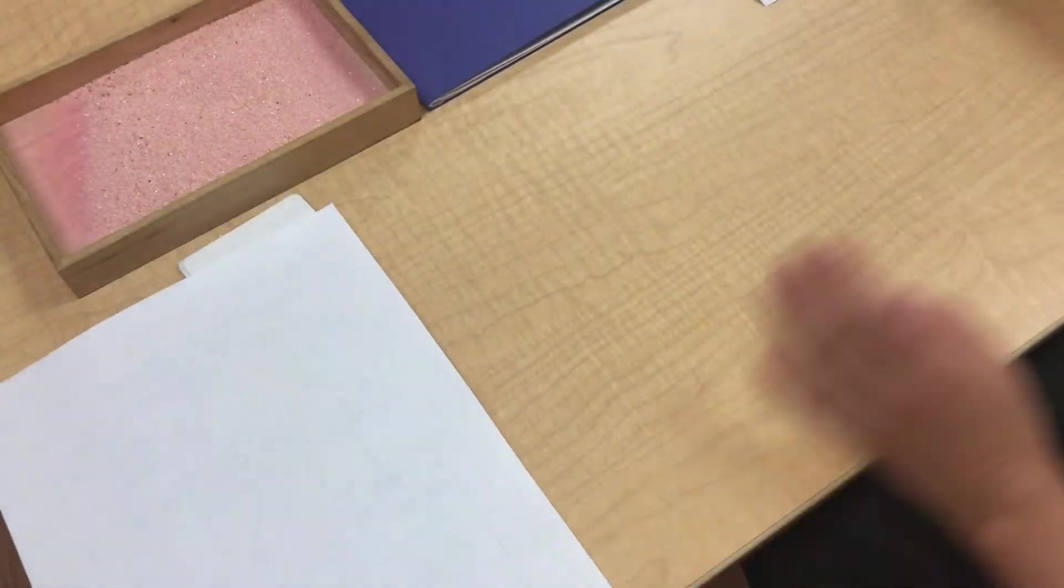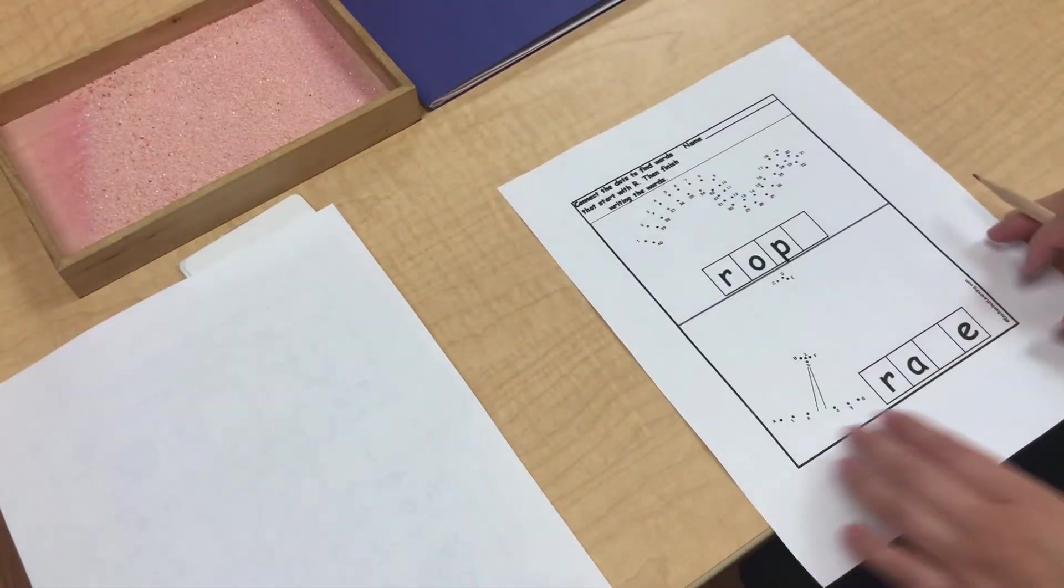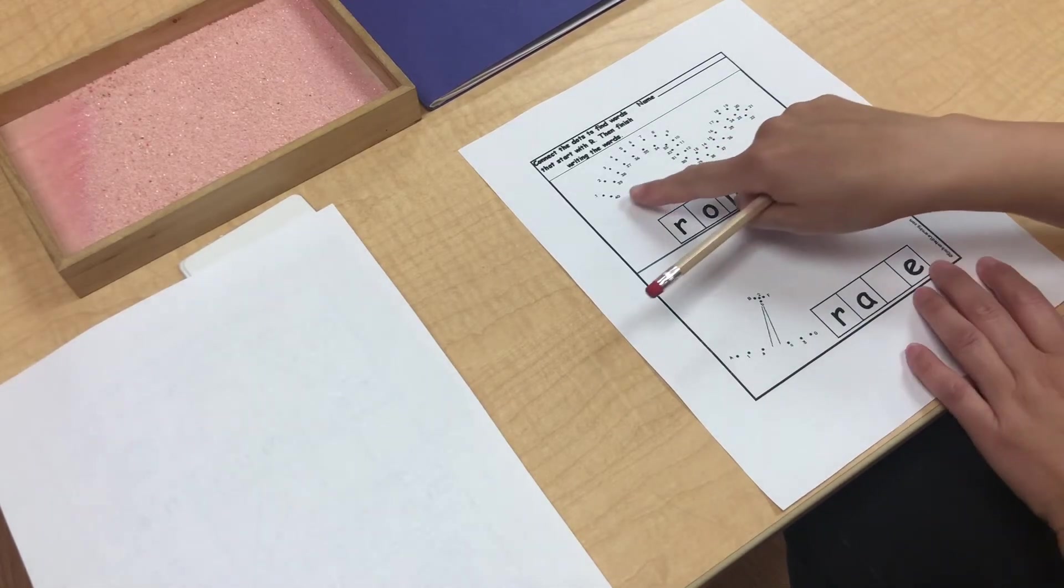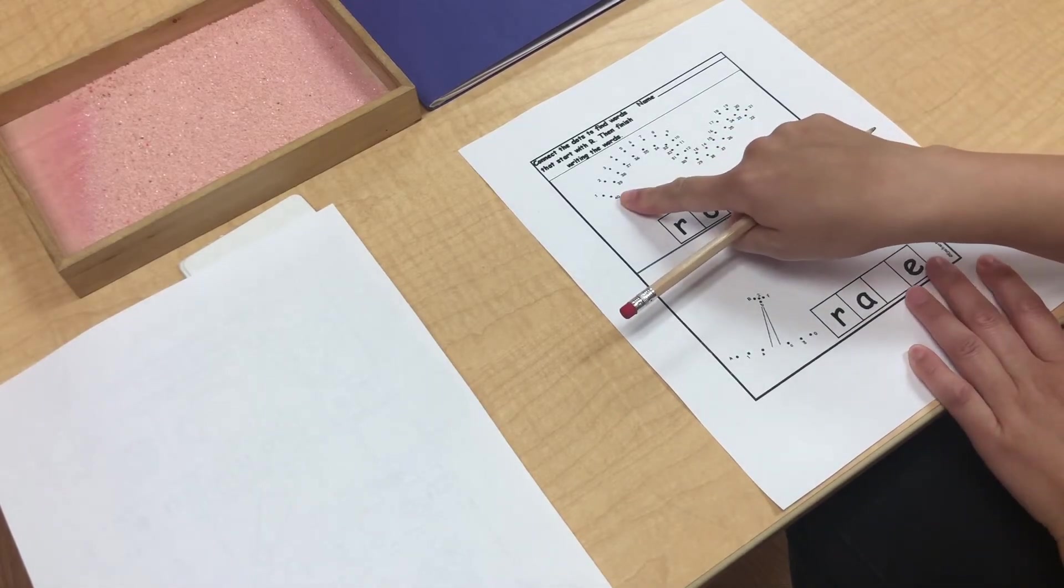Once you finish this one, we are going to work on connect the dots to find words that start with R. And then, we will finish writing the words. Ready? Let's first start to connect the dots.